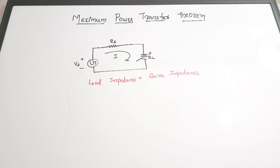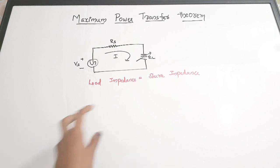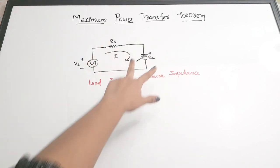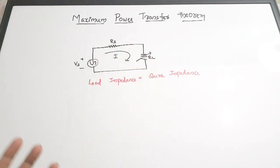This theorem is generally used for finding the value of an unknown load resistance. We consider the maximum power transfer condition, and in that case, to find the unknown load impedance or load resistance value, we use this theorem. The condition is: when maximum power transfer is taking place, load impedance equals source impedance, and hence we find the value of the load impedance.